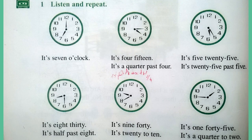Listen and repeat. It's 7 o'clock. It's 4.15 — it's a quarter past 4. It's 5.25 — it's 25 past 5. It's 8.30 — it's half past 8.